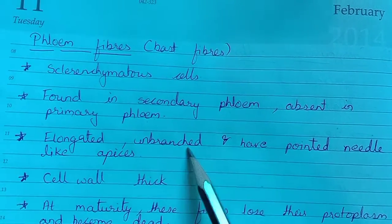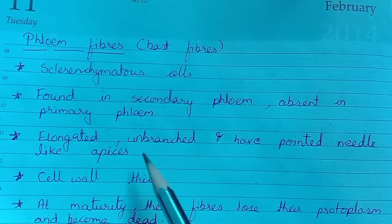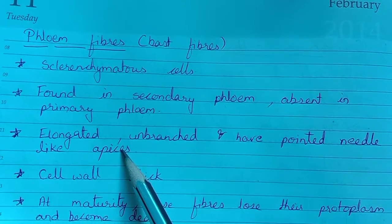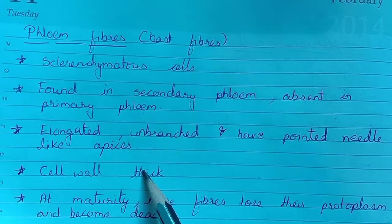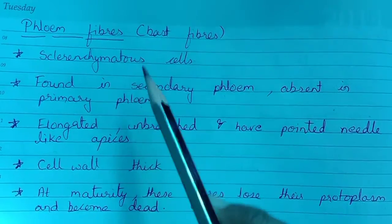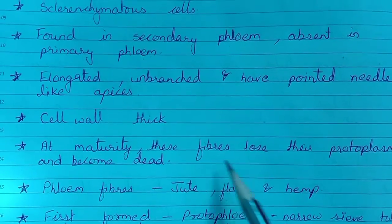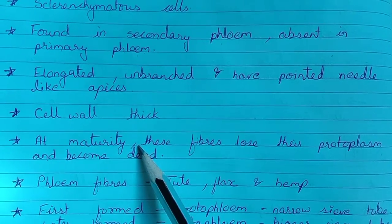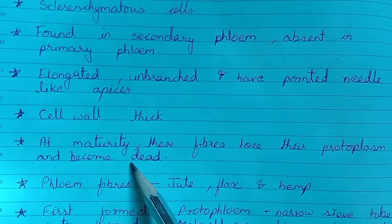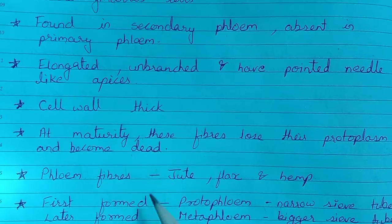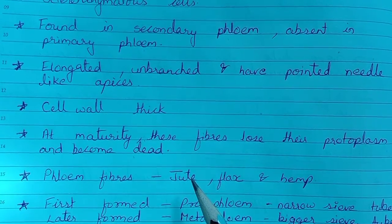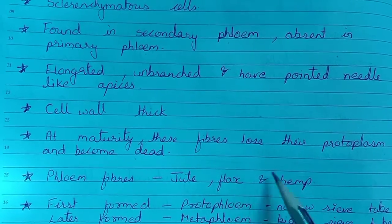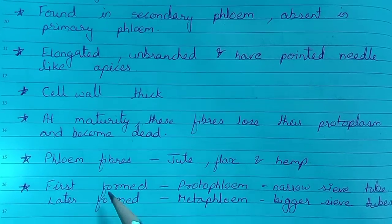Phloem fibers are elongated, unbranched, with pointed needle-like apices and very thick cell walls — hence they are sclerenchymatous. At maturity, these fibers lose their protoplasm and become dead, performing a mechanical function. Examples of phloem fibers we use include jute, flax, and hemp.